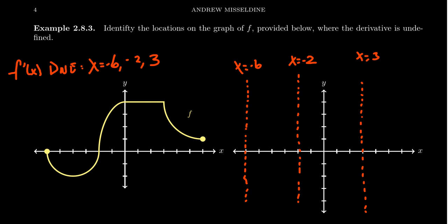Let's look at the weird behavior happening at x equals 3. Because of the sharp corner, the approach from the left wants to be 0, and the approach from the right wants to be a vertical asymptote. Everywhere from x equals 0 to x equals 3, the function is completely flat — it's a constant region. So the derivative is going to be 0 in all of those locations. We plot this as a flat line from x equals 0 to x equals 3, with an open dot at x equals 3 because the function is undefined there.